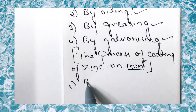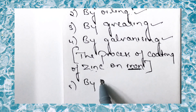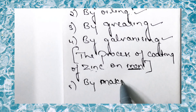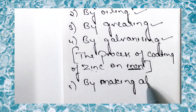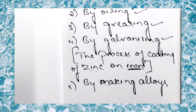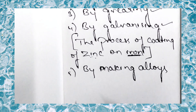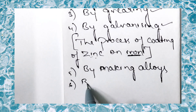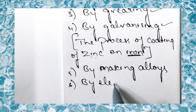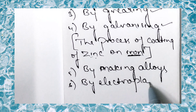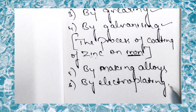We can also avoid corrosion by making alloys. Another method is by electroplating.